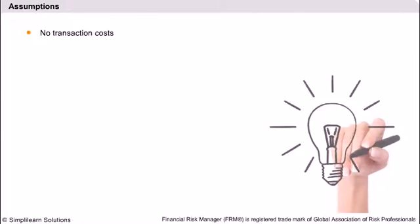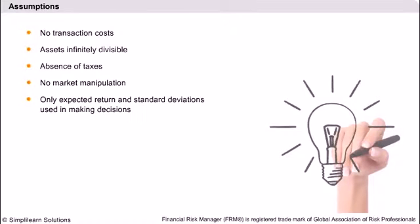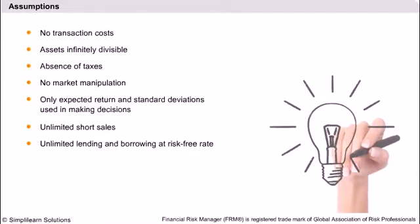Assumptions: The first assumption is that there is no transaction cost, or any cost of purchasing or selling the security. The second is that you can buy or sell any asset in fractions. The third is that there are no income taxes, and hence there is no difference in income from dividends or capital gains. The fourth is that single investors cannot manipulate the market. The fifth is that investors rely only on return and volatility expectations. The sixth is that investors can short sell any amount. The seventh is that investors can borrow and lend at the risk-free rate in any amount.